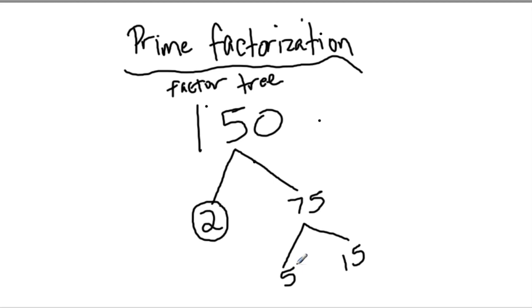5 is prime because the only factors of 5 are 1 and 5. 15 is not prime because it has other factors. For example, we could do 3 times 5, and these are both prime.